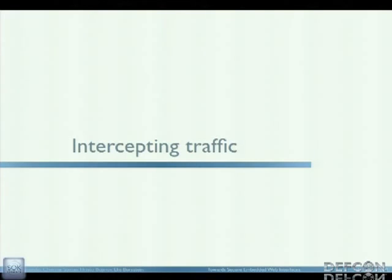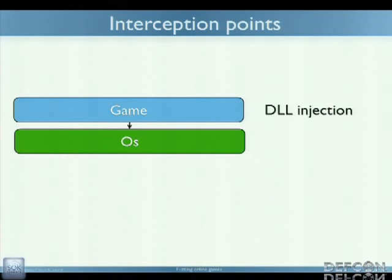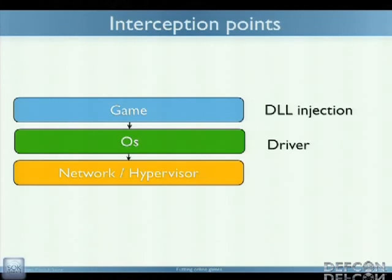There are mainly three ways for intercepting traffic. The first one is DLL injection — I'm speaking of Windows games; for Linux fans it's more like LD_PRELOAD where you try to overwrite a specific set of functions. The other one is working at the OS level where you write a driver or use a VM, and then write a driver to intercept packets before they leave the box. The last way is to have a network or IP advisor and do the interception after the packets leave the box.